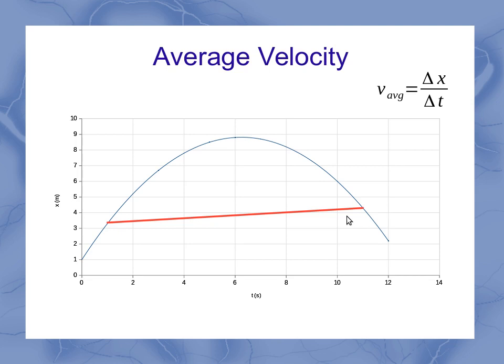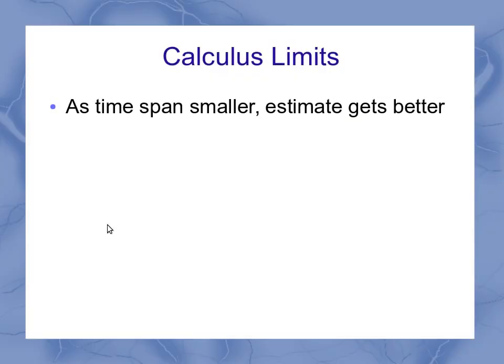Well, if I reduce that time span but keep my same initial point, what I find is that as I reduce it, it changes the slope. But that slope is approaching a value, which is the tangent to the curve at that specific point in time. To put it into words, as this time span gets smaller, the estimate of that tangent gets better, and the exact value would happen when the time span goes to zero.